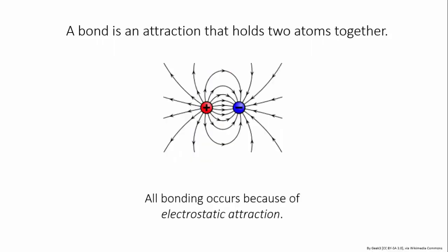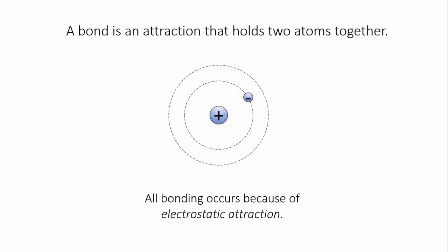All bonds form because of electrostatic attraction. Electrostatic attraction is the force that pulls two oppositely charged particles together. It is electrostatic attraction that keeps negatively charged electrons close to the positively charged nucleus of an atom.